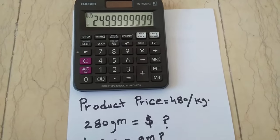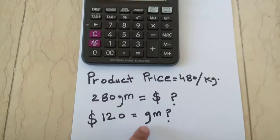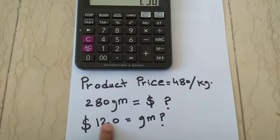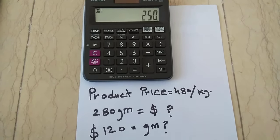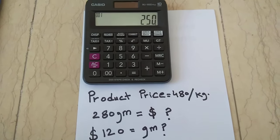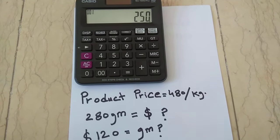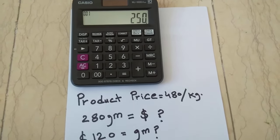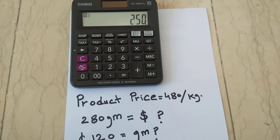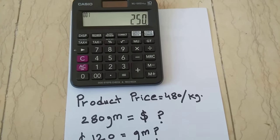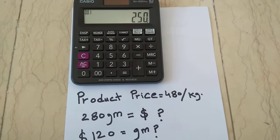You will get 249.99, or round it to 250. So for 120 dollars you will get 250 grams of that product. This is a simple and basic technique very useful in your day-to-day life. I hope I explained it well — if you have any questions, ask me in the comments. Please like my video and subscribe to my channel. Thank you very much.